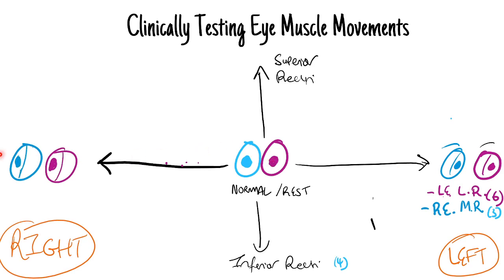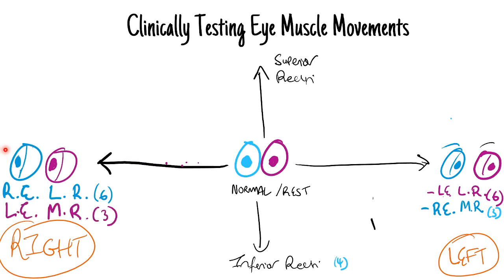If you ask the patient to look right - to our left, their right - you're doing the opposite: testing the lateral rectus of your right eye and the medial rectus of your left eye.